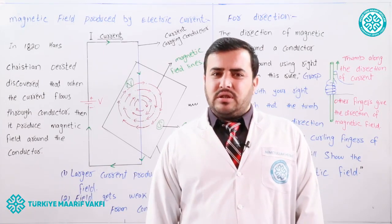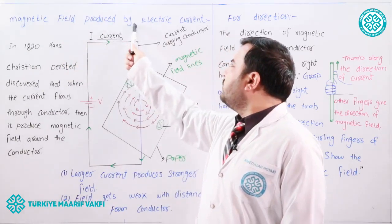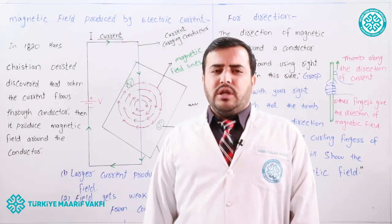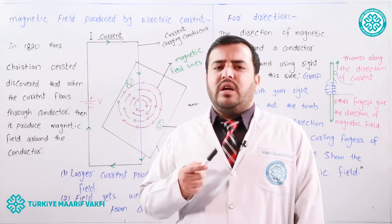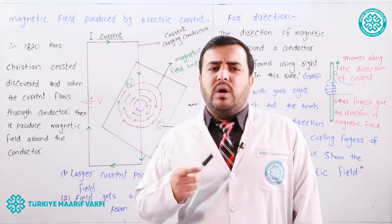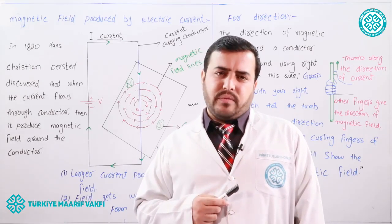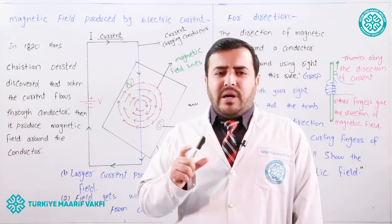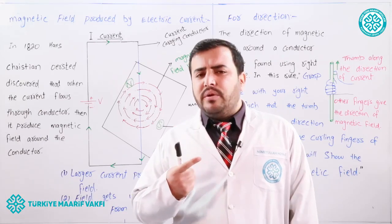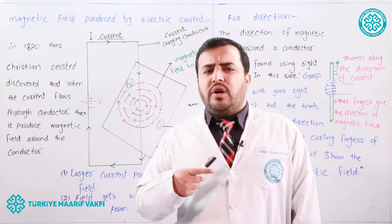Bismillahirrahmanirrahim. Dear students, today we are going to discuss the topic of magnetic field produced by electric current. In 1820, a scientist by the name of Hans Christian Oersted was studying a current flowing through a conductor, and a compass needle was present near the conductor in which the current was flowing.